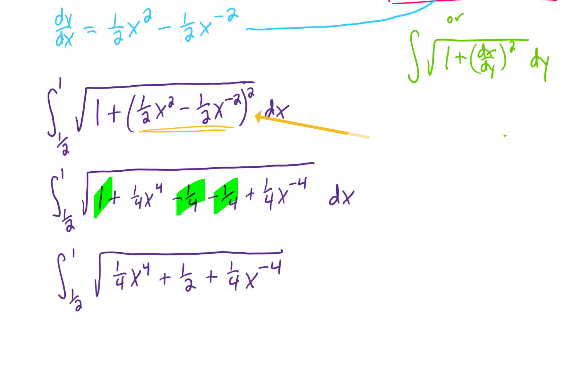Now as a side note, you'll notice that when we foiled out this term up here, we ended up with these terms here. And if we just combine those two negative 1/4s, we would have gotten 1/4 x to the fourth minus 1/2 plus 1/4 x to the negative 4th.